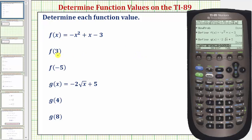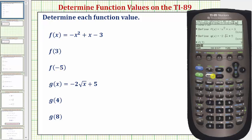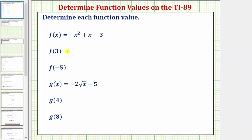For f of three, we enter f of three — so alpha vertical bar, in parenthesis three, enter. F of three is equal to negative nine. For f of negative five, we enter alpha vertical bar in parenthesis negative five, enter. F of negative five is equal to negative thirty-three. Let's record these two function values: f of three equals negative nine, f of negative five equals negative thirty-three.